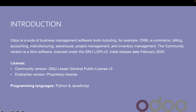Odoo was released in February 2005. There are two types of licenses: one is the community version and the other is the enterprise version. The community version is GNU LGPL version 3, and there is also the enterprise version.